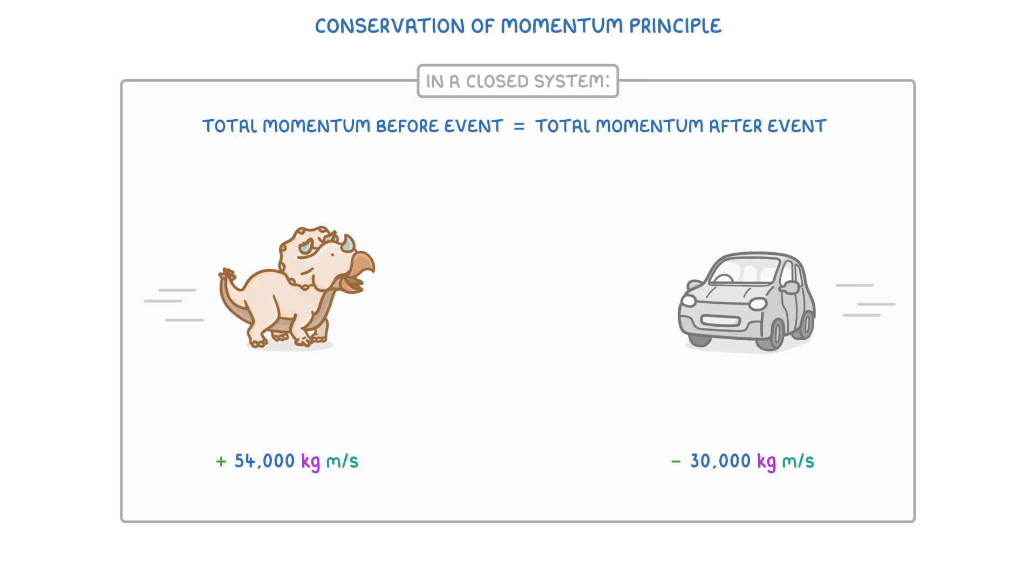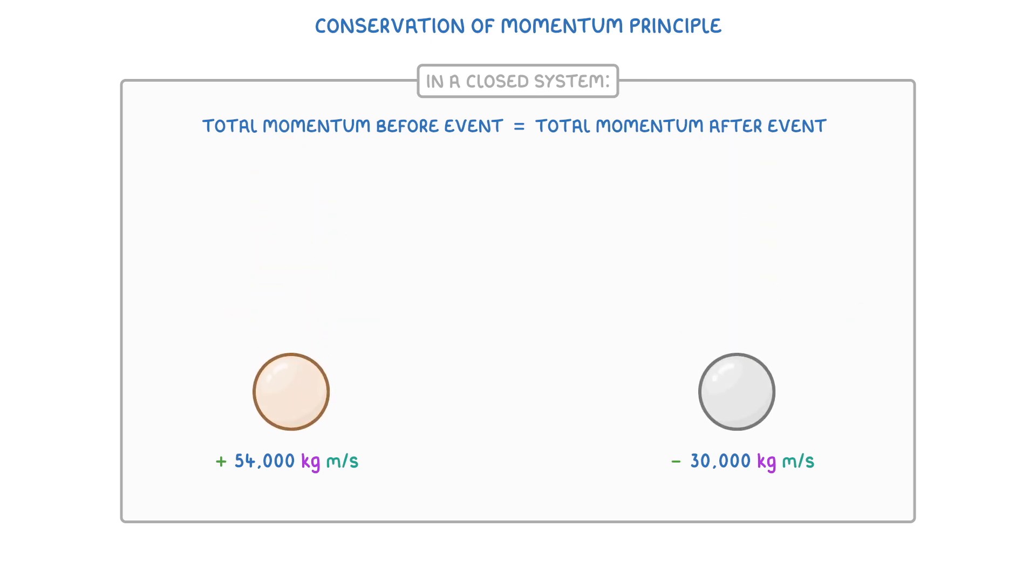To see how this works, let's imagine our dinosaur and our car as two particles which are travelling towards each other and are going to collide, after which they will both continue moving together at the same speed. How would we find their velocity after the collision?